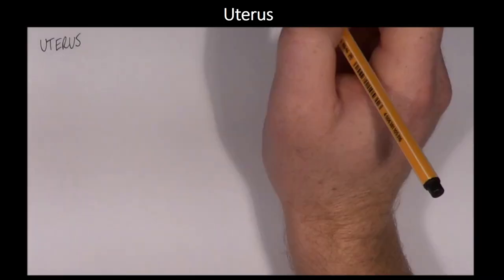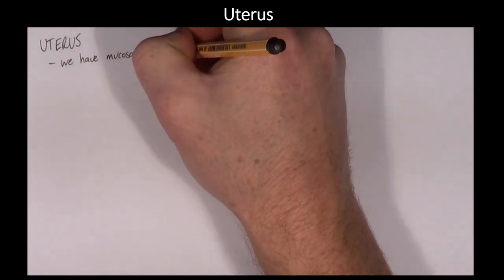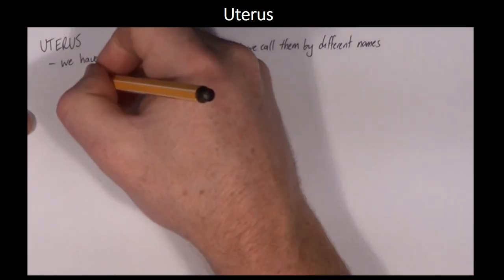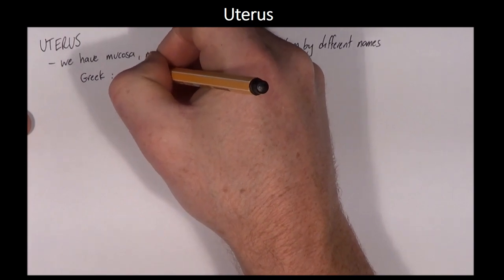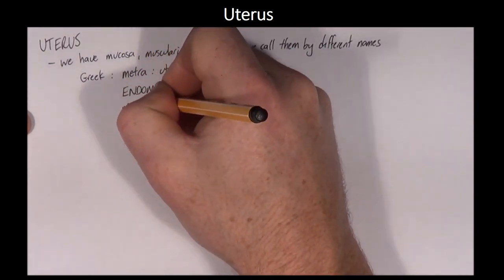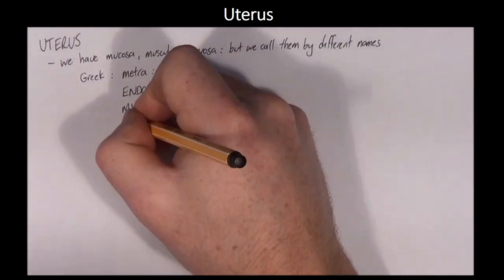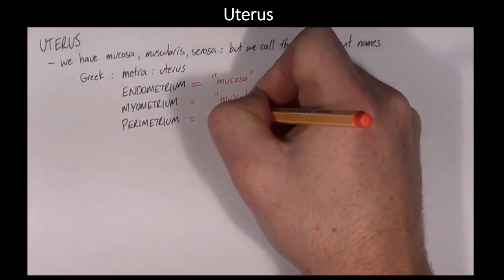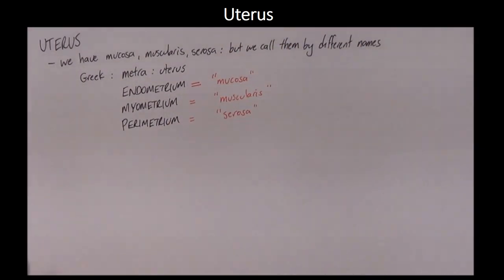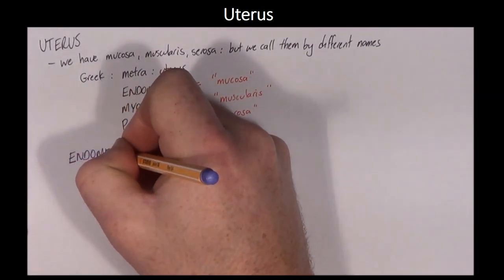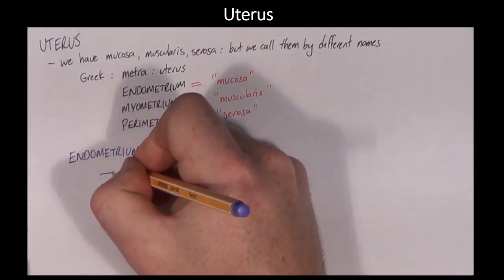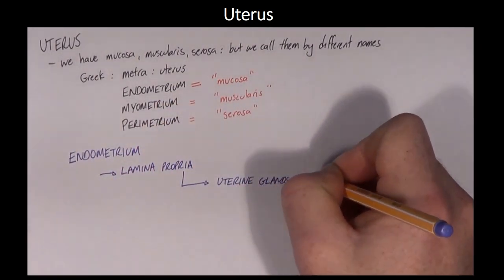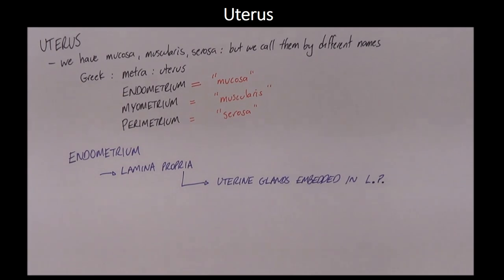From innermost to outermost, the uterus comprises the endometrium, the myometrium, and the perimetrium. The perimetrium is also known as the serosa. The endometrium of the cow consists of a lamina propria in which are embedded uterine glands. The lamina propria is richly supplied with blood vessels.